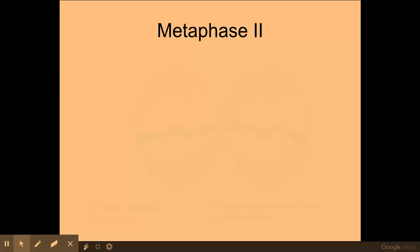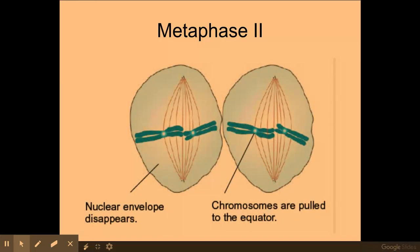In metaphase 2, the chromosomes are going to line up along the equator of the cell. The spindle fibers are going to attach to the centromere, and again here we have independent assortment whereby the chromosomes will arrange themselves randomly on the equator.